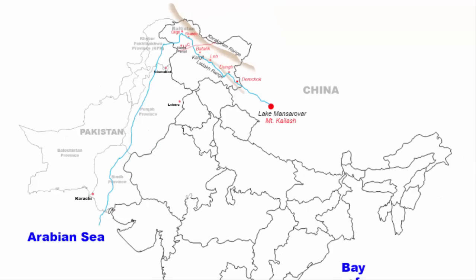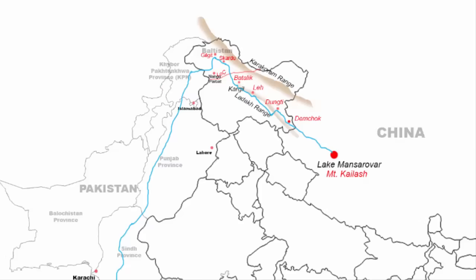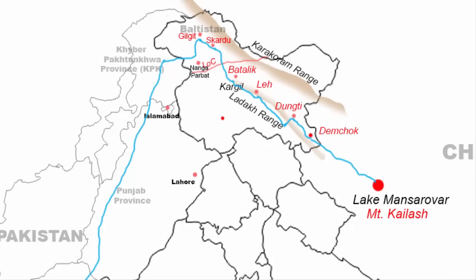Now that we have seen the main route of the Indus River, let's look at the principal tributaries. There are 5 tributaries — let's look at each one of them. The first one is the Jhelum. The Jhelum River originates from the Verinag spring in the Anantanag district of Jammu and Kashmir.